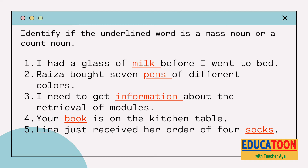Let's practice. Identify if the underlined word is a mass noun or a count noun. Number one: I had a glass of milk before I went to bed.